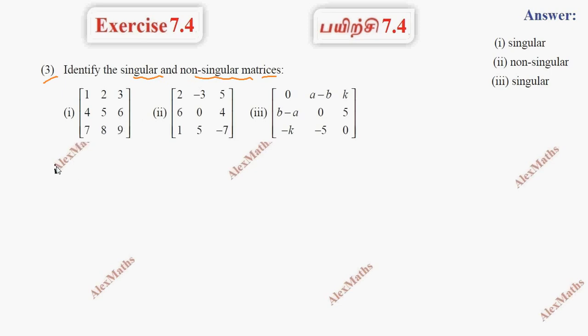First subdivision, determinant value is 0. So, 1, 2, 3, 4, 5, 6, 7, 8, 9.